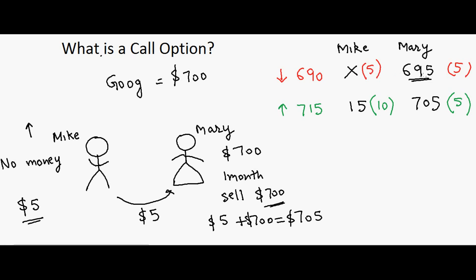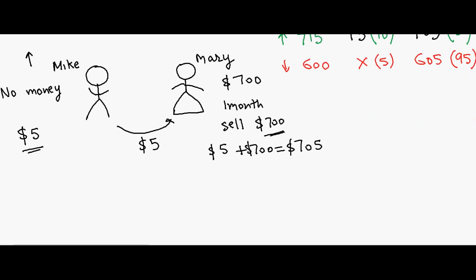On the downside, Mike didn't lose anything except the $5 premium he paid. If the stock had gone way down to $600, Mike still wouldn't buy at $700, so his loss is still only $5. But Mary, who was holding the stock, ends up with $605 and a total loss of $95.